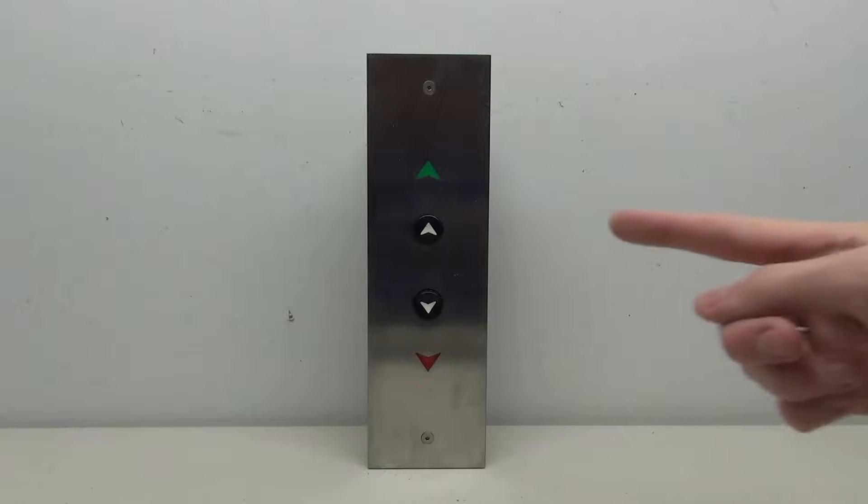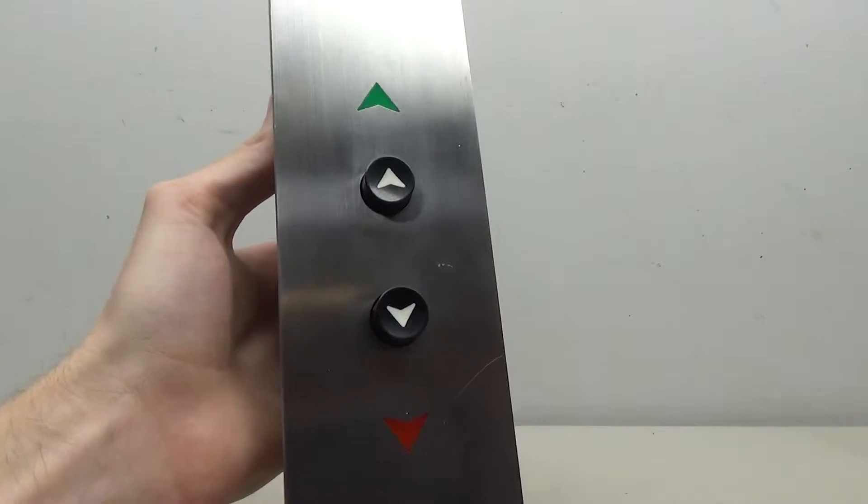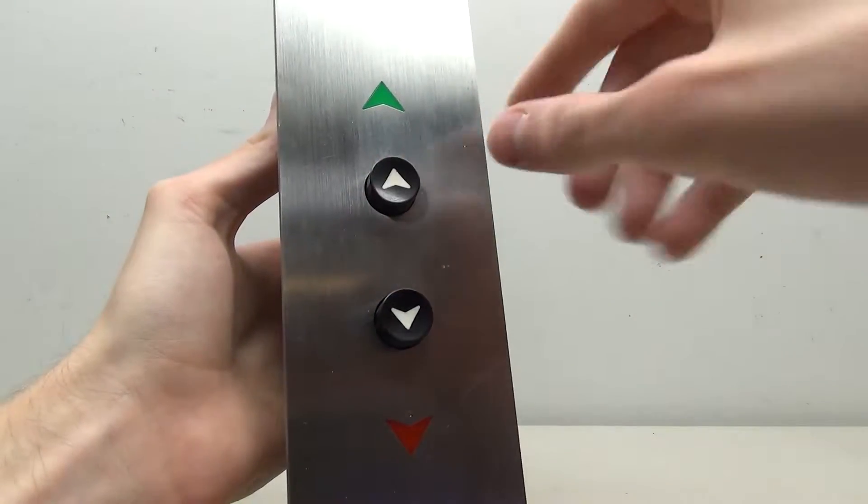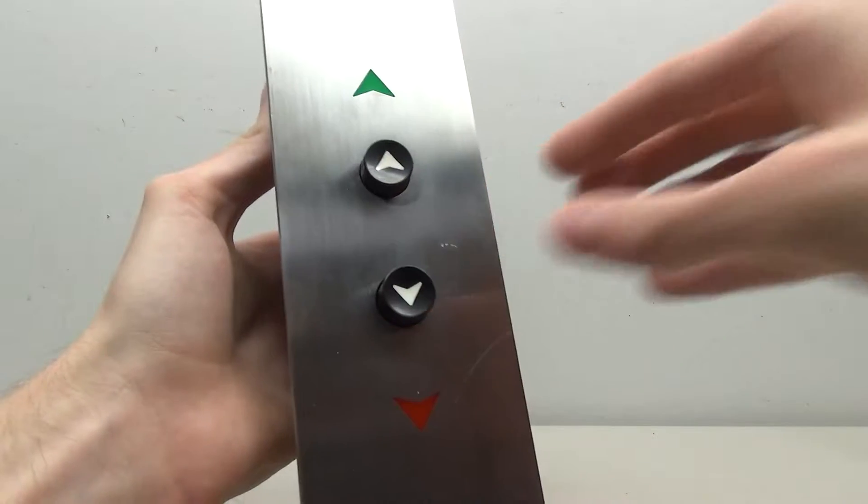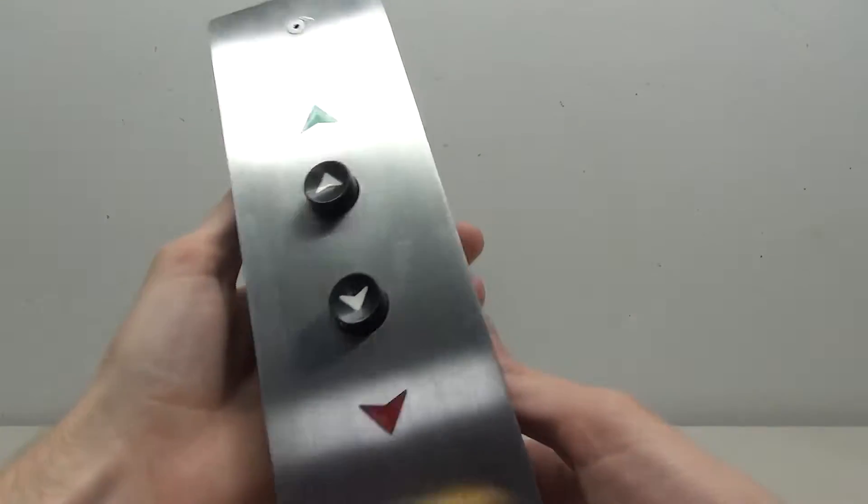On this elevator parts project we're taking a look at this Armor call button. Let's go ahead and get started. These buttons were found on Armor elevators and these are the older black buttons. I have only personally seen these in the field a couple times, and that was in the Washington DC area. However, I'm sure there's plenty more of these around.